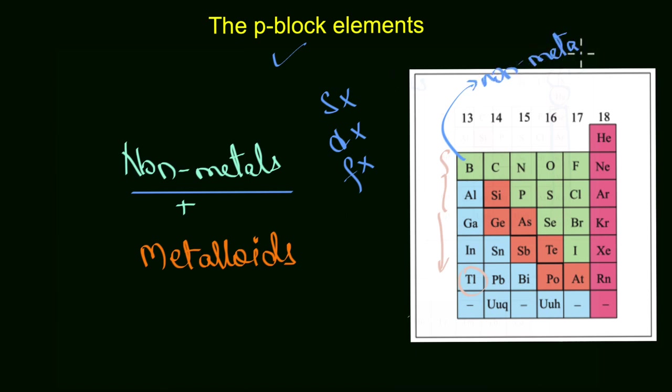But can you say the same thing about thallium, which is present in the same group? Nope. Thallium is purely metallic in nature. As you go to the other subsequent groups, you'll find that this non-metallic nature transitions through the metalloid character.